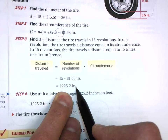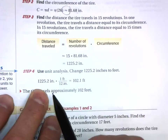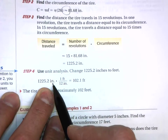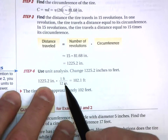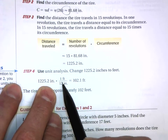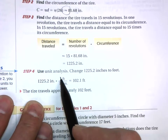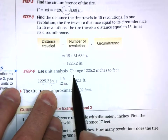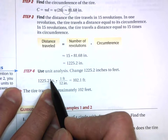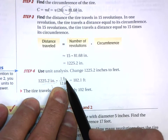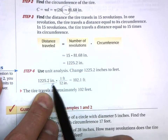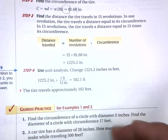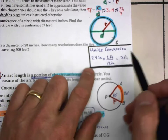That's a large number in inches, so let's convert. Take 1,225.2 inches and convert to feet. We know 1 foot equals 12 inches. Place inches in the denominator of your conversion fraction so the inch units cancel out, leaving only feet. Divide 1,225.2 by 12 to get approximately 102.1 feet.